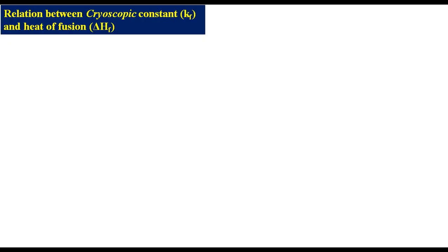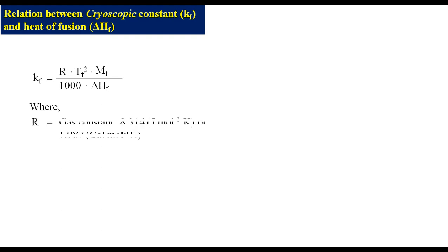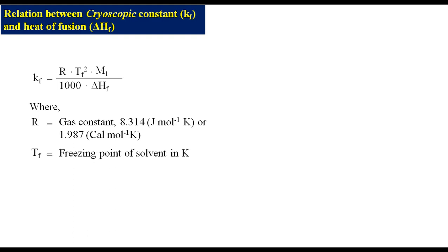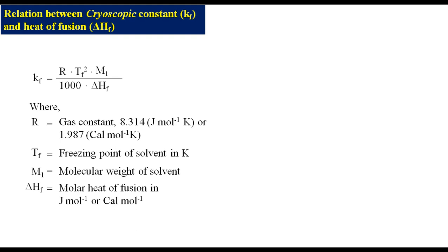Relation between the cryoscopic constant and heat of fusion: Kf is related to heat of fusion as Kf equals R times Tf squared times M1 divided by 1000 times delta Hf, where R is the gas constant equal to 8.314 J·mol⁻¹·K⁻¹ or 1.987 cal·mol⁻¹·K⁻¹, Tf is the freezing point of the solvent in Kelvin, M1 is the molar mass of the solvent, and delta Hf is the molar heat of fusion in J·mol⁻¹ or cal·mol⁻¹ depending on the unit of R.